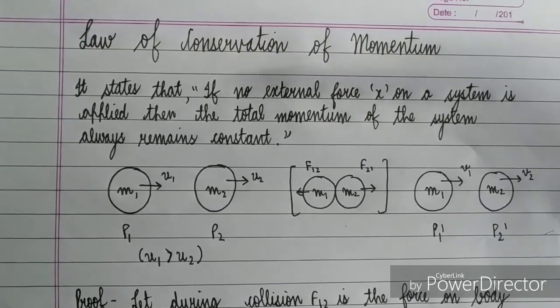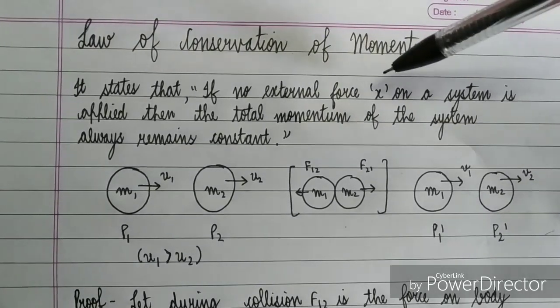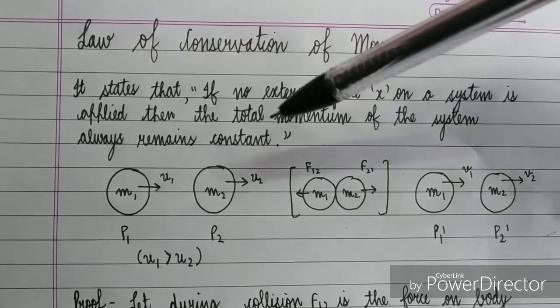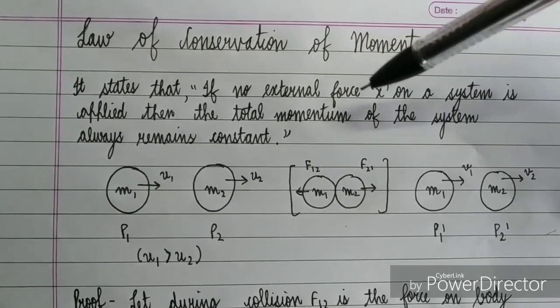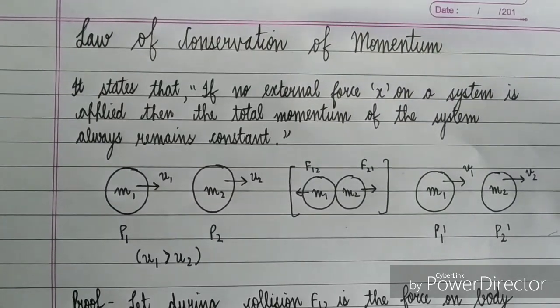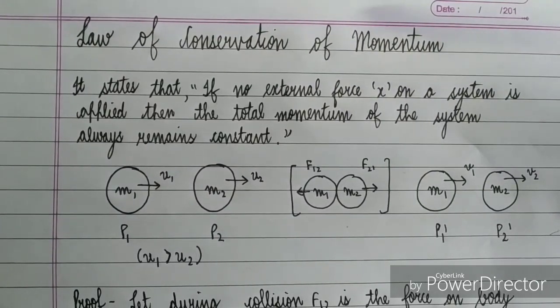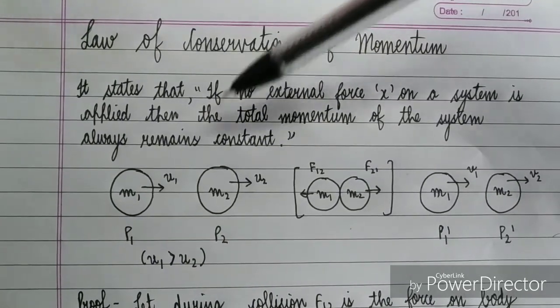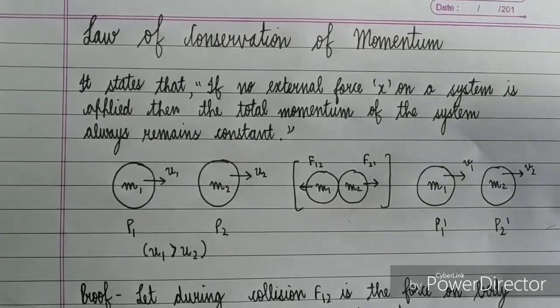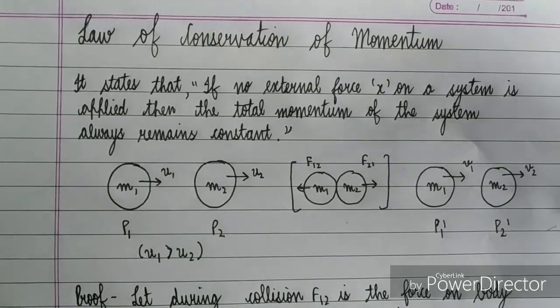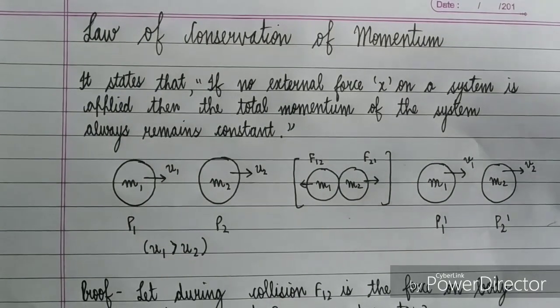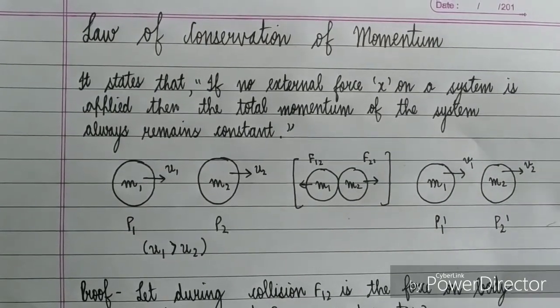It states that if no external force on a system is applied, then the total momentum of the system always remains constant. If any force does not apply to a system, then the momentum of the body before the collision will remain after that. So momentum before will always remain the same, basically it would be equal to momentum afterwards.